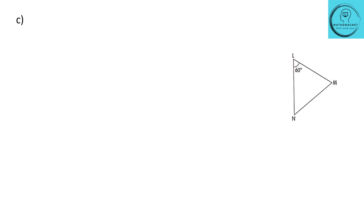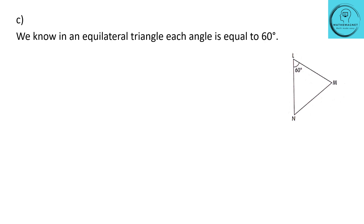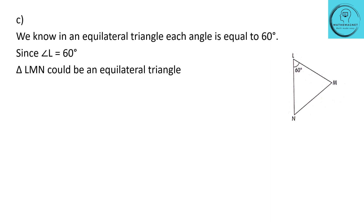Next, question C. The triangle given is triangle LMN and they have given angle L as 60 degrees. We know in an equilateral triangle each angle is equal to 60 degrees. So since one angle is 60 degrees, we can assume the other two are also equal to 60 degrees and call this an equilateral triangle.